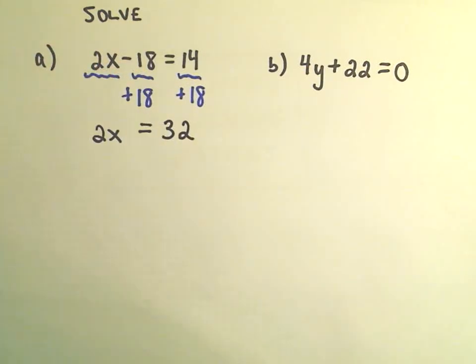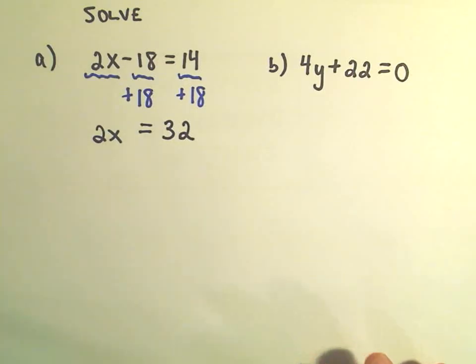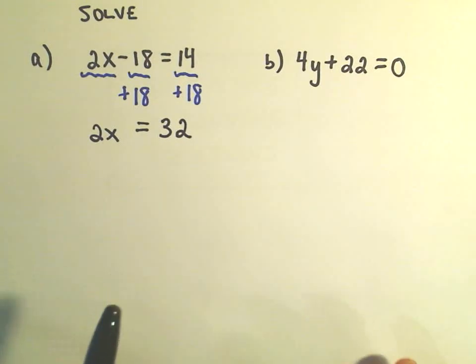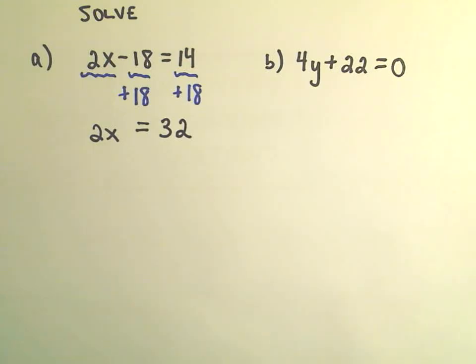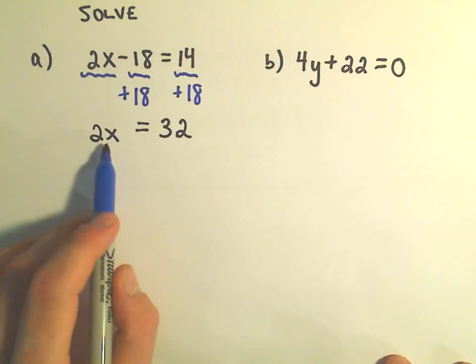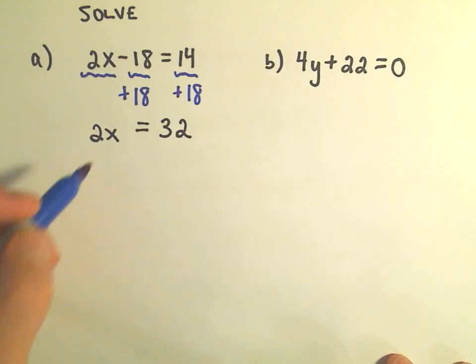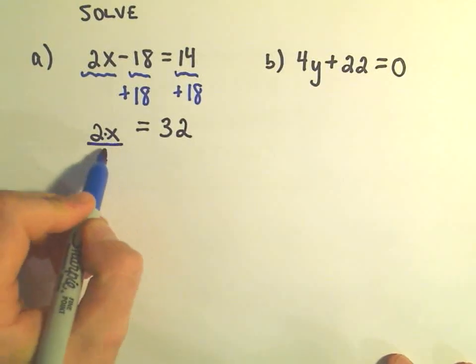So now I'm at kind of a good place. I've got my x's on one side, my numbers on the other. And what I'm trying to do is I want to get x all by itself. So now I think, well, what's happening to the x? He's being multiplied by 2. Well, what undoes multiplication? Well, the operation that undoes multiplication is division.